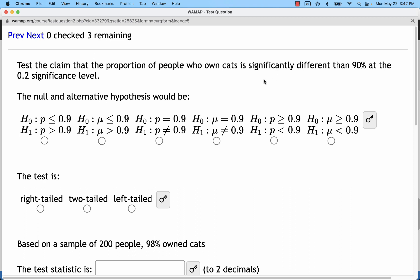First, we need to figure out which null and alternative hypothesis is correct. And, we need to start by just looking at the wording here. The claim is that the proportion of people who own cats is different from 90%. So, we'll need to look for that not equal sign and a p.